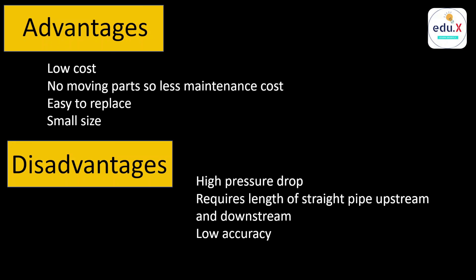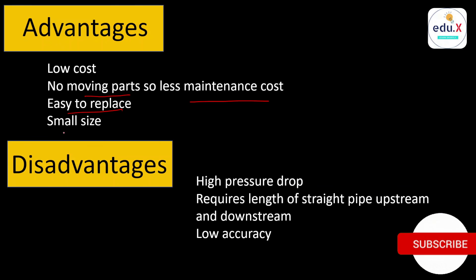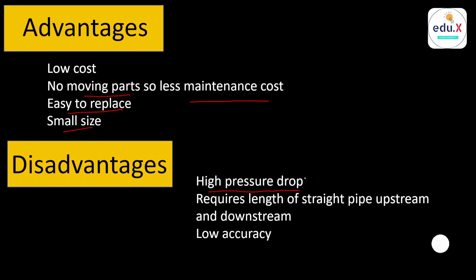The advantages of orifice plates include: they are low-cost flow metering devices with no moving parts, resulting in less maintenance cost; they are easy to replace by simply opening the flange; and they are relatively small in size. Disadvantages include: high pressure drop causing energy loss; they require a length of straight pipe both upstream and downstream for accurate measurement; and their flow measurement accuracy is relatively low compared to other meters such as the Venturi.